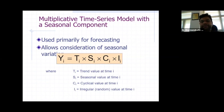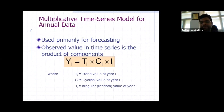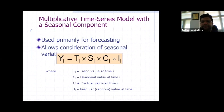So our outcome variable at a particular time interval i is equal to Ti (trend) multiplied by Si (seasonal at the i-th time point) multiplied by Ci (cyclic) multiplied by Ii (irregular). This is the multiplicative model of time series analysis used for forecasting. If we remove the seasonal component, then this model can be used without it; but if we keep the seasonal component, then all four components are considered together.